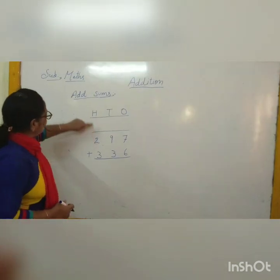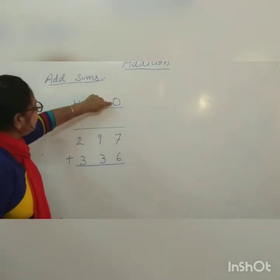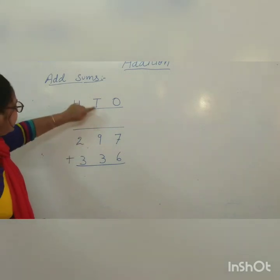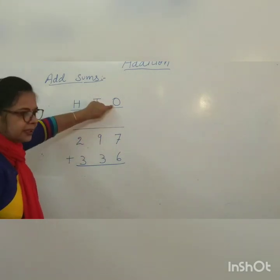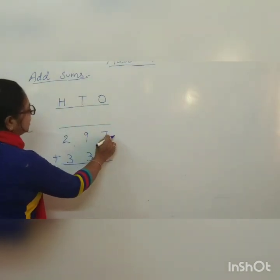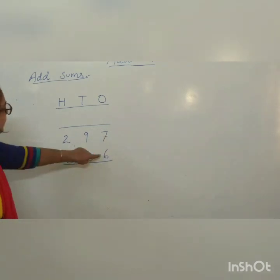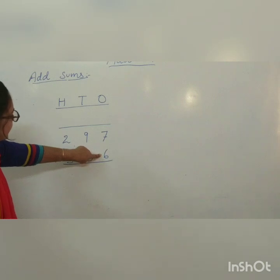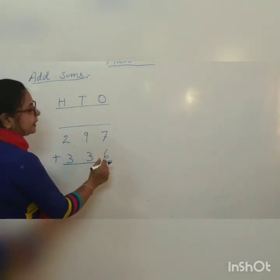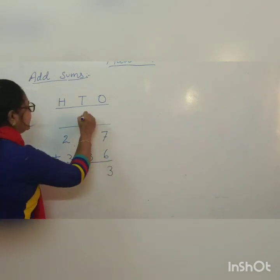The next sum is 2 hundreds, 9 tens, 7 ones plus 3 hundreds, 3 tens, 6 ones. We have to start from the ones place. 7 is the big number. Keep the number in mind and add the small number 6. 7 plus 6 are 13 ones. So 3 is in the ones place and 1 carries to the tens.